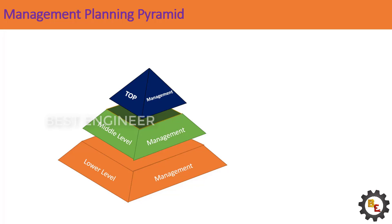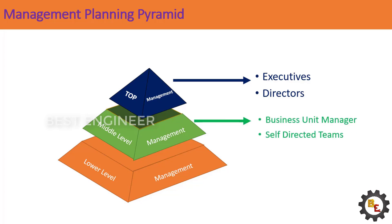Top level of management, or administrative management, consists of an organization's board of directors and the chief executive or managing director. Middle or executive level of management includes departmental managers, business unit managers, and self-directed teams. Middle level management is directly monitored by top management for the functioning of their respective departments. For smaller organizations there will be one middle management level, but larger enterprises can have senior and junior levels of managers.